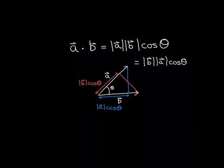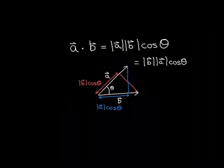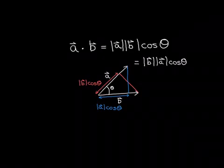So it's really very beautiful. You can view the dot product of vector A with vector B as either the length of vector A times the length of the component of vector B in the same direction as vector A, or as the length of vector B times the length of the component of vector A in the same direction as vector B. Those two answers are exactly the same thing, and that number is the dot product of the two vectors.